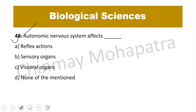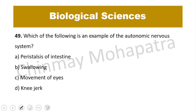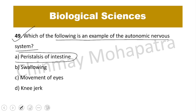Question number 48: The autonomic nervous system affects — it controls visceral organs like the heart and lungs. Question 49: Which of the following is an example of the autonomic nervous system? The right answer is peristalsis of the intestine — an example of the autonomic nervous system.